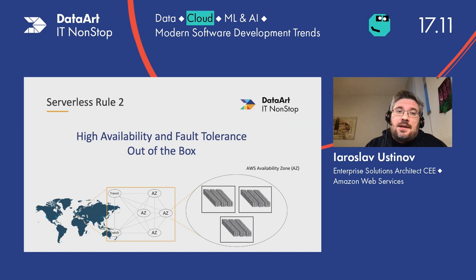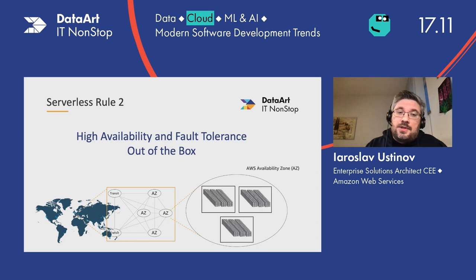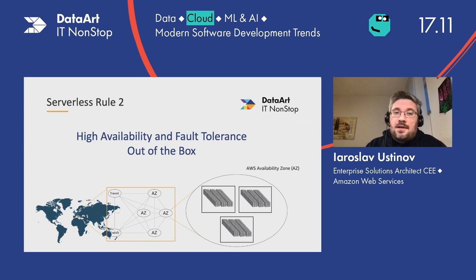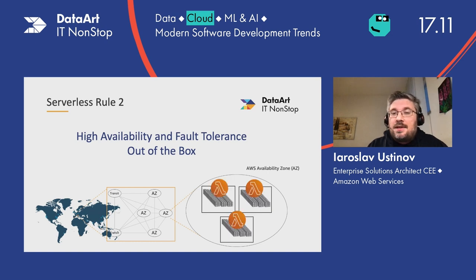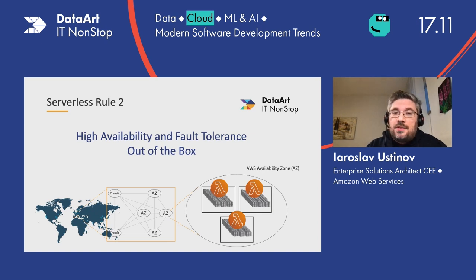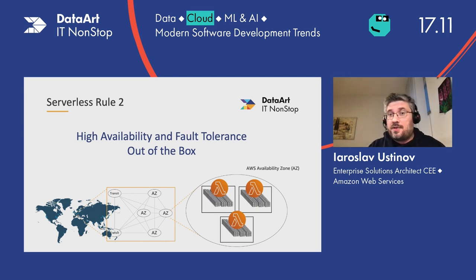The second rule is that high availability and fault tolerance come out of the box. If you're familiar with how AWS infrastructure is designed, we have regions which are geographical locations, with several availability zones, and each consists of several data centers. Whenever you provision a serverless service, for example Lambda, it's automatically provisioned in several data centers. If for some reason one is down, your application is still up and running. You don't need to think or design something specifically for that.